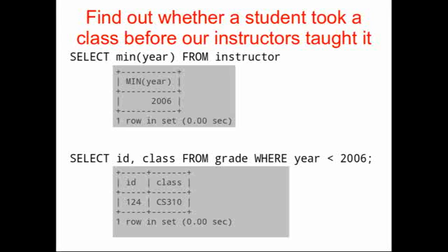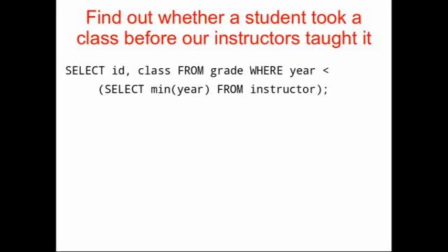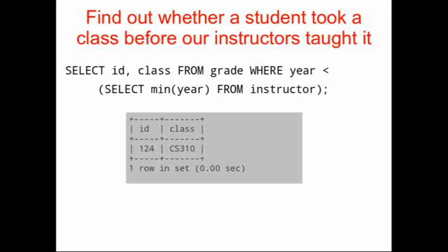Notice that we have a less-than operator, so in our select statement we're identifying anything less than 2006. To build the more complex query, we start with SELECT MIN(year) FROM instructor and use that as a nested query, where we select ID and class from grade where all of the years are less than the minimum year from instructor. That gives us the same answer.